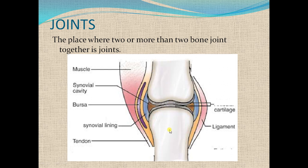A typical joint can be seen in this diagram. Two bones meet, and the ends of the bones are covered by a tissue called cartilage, which protects the bones from injuries during rubbing or movement. The joint is covered by a lining called the synovial membrane. Inside this membrane there is a cavity filled by a fluid called synovial fluid.